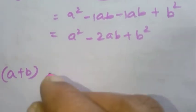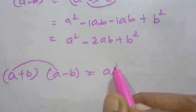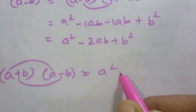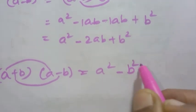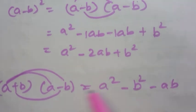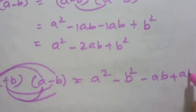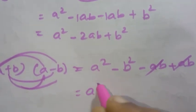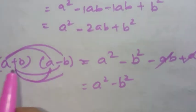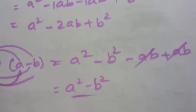Now for a plus b into a minus b. Expanding: a into a is a squared, a into minus b is minus ab, b into a is plus ab, b into minus b is minus b squared. The plus ab and minus ab cancel. So a plus b into a minus b equals a squared minus b squared. That is the formula derivation for the identities.